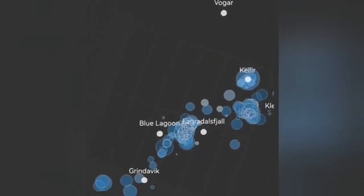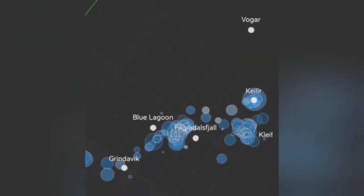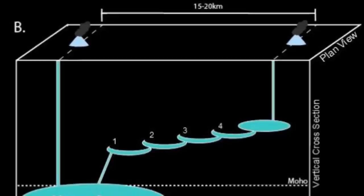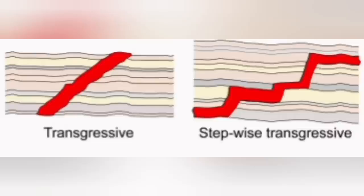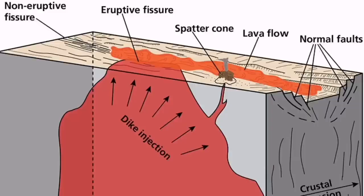This is the diagram or cartoon showing what I mean by this transgressive sill moving from what is Svartsengi at an angle toward the town of Grindavik, the vicinity, north part of it.